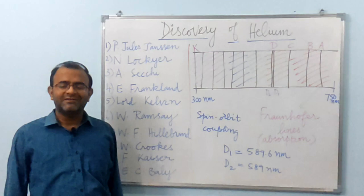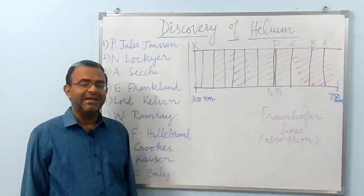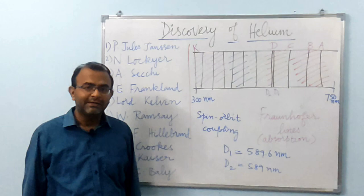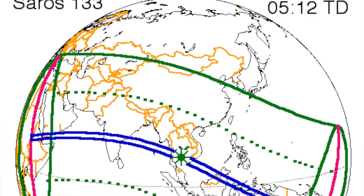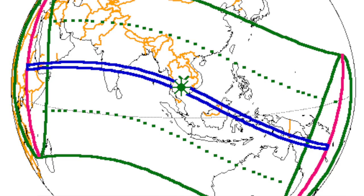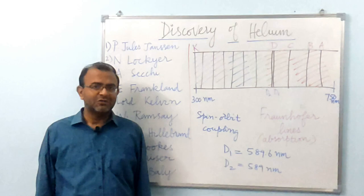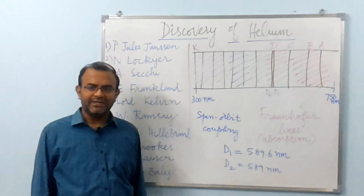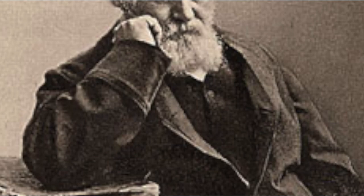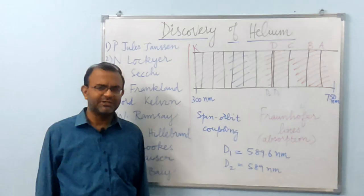The precursor to the discovery of helium was the total solar eclipse of 1868. Several expeditions were sent to different parts of the world to observe this eclipse and record the spectrum of the solar chromosphere and its prominences. On the 18th of August that year, Jules Janssen, a French astronomer who was on an expedition to observe and study the eclipse from India, along with several others from other regions, observed an unusual yellow line in the recorded spectrum.